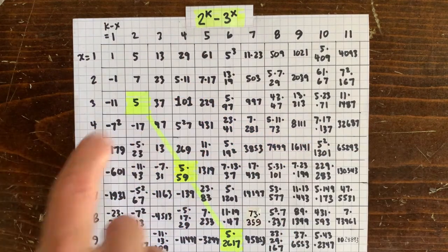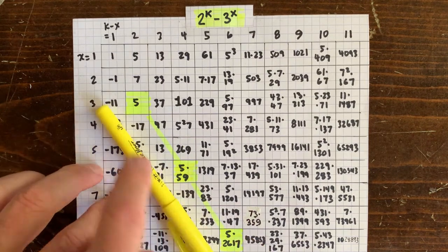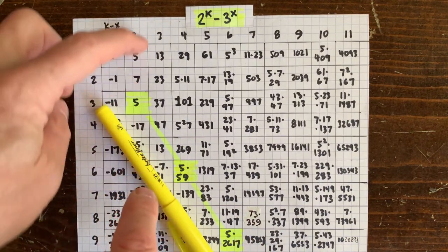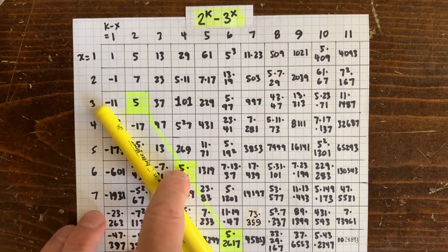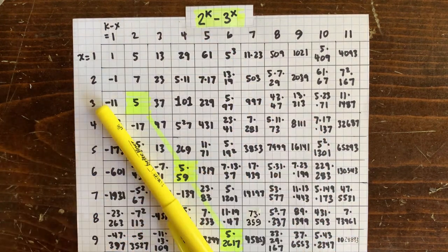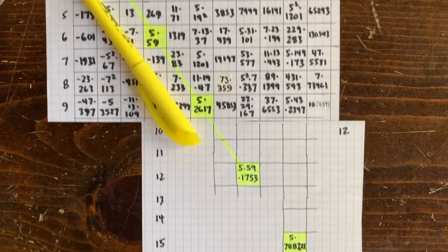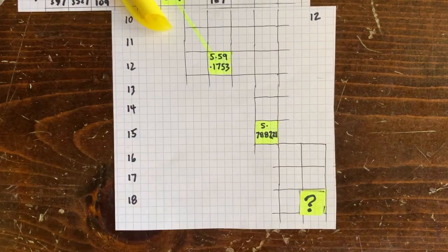Let's look at this yellow ray of sunshine. It starts at x equals 3, k minus x equals 2, where the value is 5. This 5 gets inherited as we multiply x and k minus x by 2, 3, 4, and so on. So all these cells have a 5.